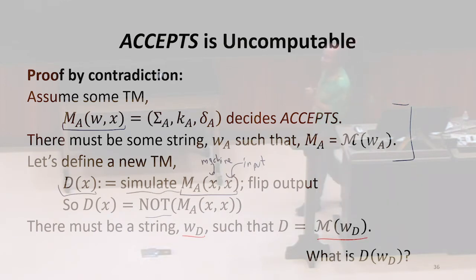What does it mean to simulate MA running on X, X? Can we do that? Have we built a machine that can simulate other Turing machines? That's our machine U. Our universal Turing machine can do that.